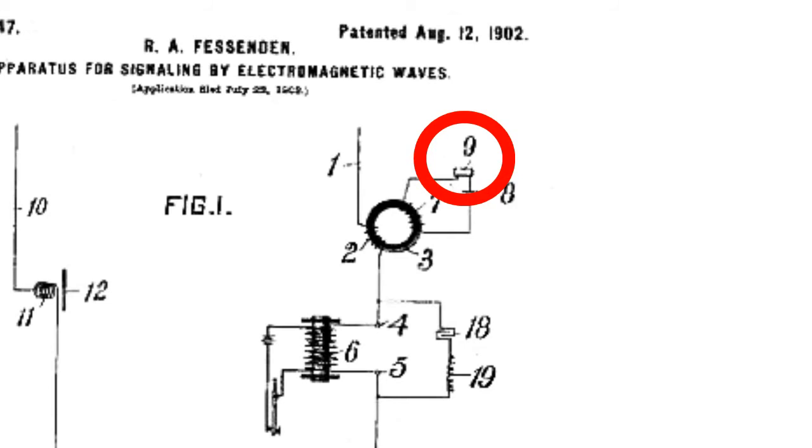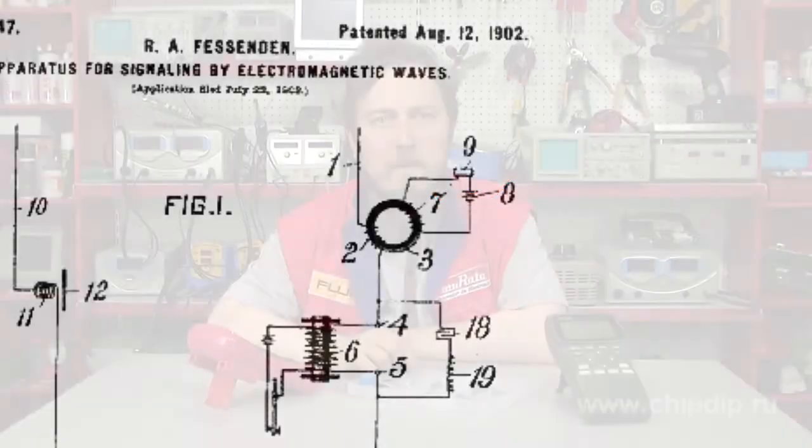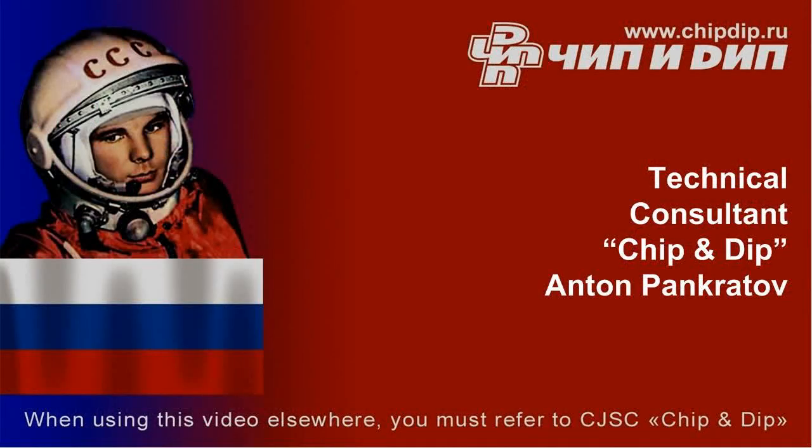As a result, in 1906 this equipment was used to transmit voice over a distance for the first time. And although the equipment could not be considered compact or portable, still with its help voice could be transmitted wirelessly. And therefore it can be considered the first radio telephone.